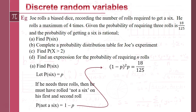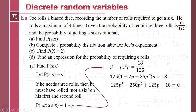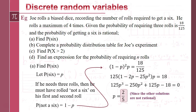Now we've got an equation to solve in terms of P. Moving 125 across and expanding the bracket, then rearranging, we end up with a cubic. Using the polynomial solver on the calculator — degree 3 — it gives us a value. Two other solutions were not rational, and we said the probability of getting a 6 had to be rational, so we end up with P equals 2/5.